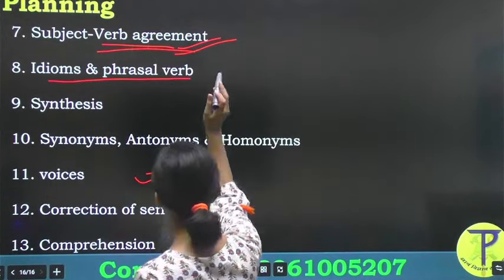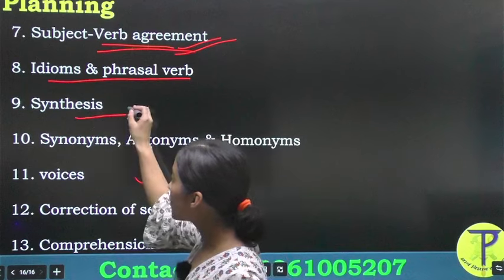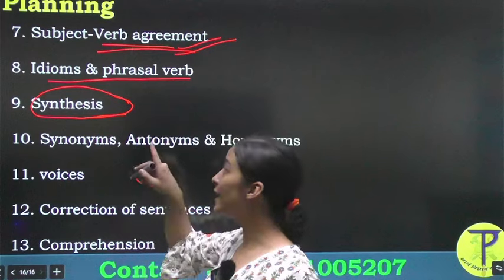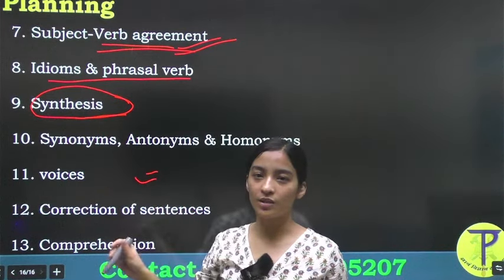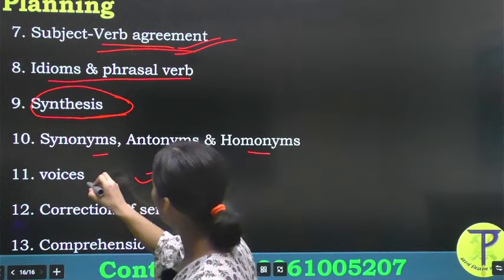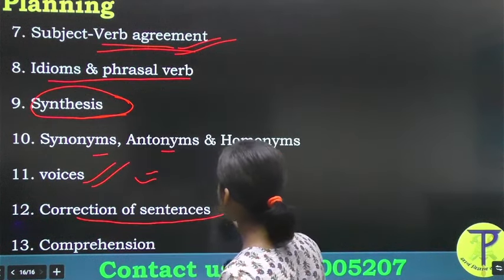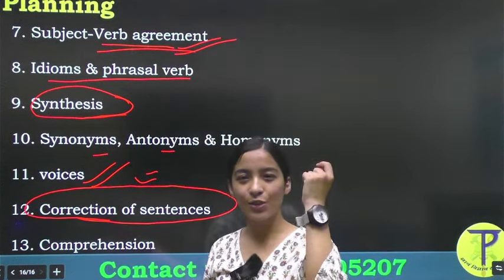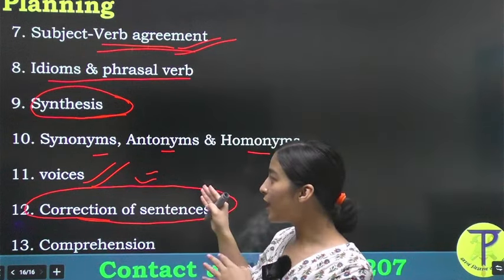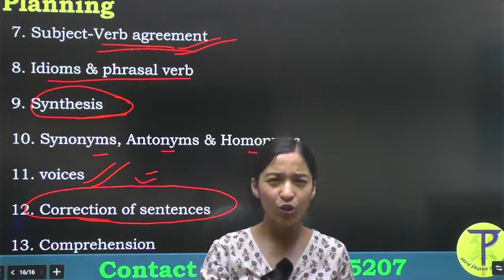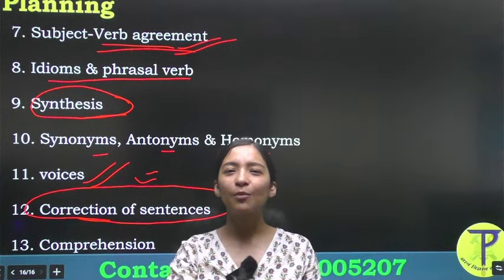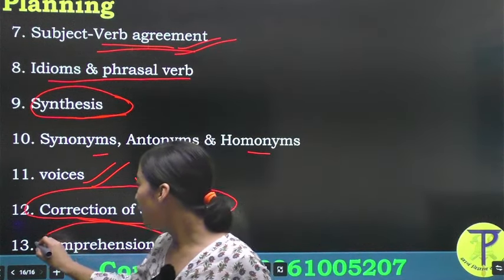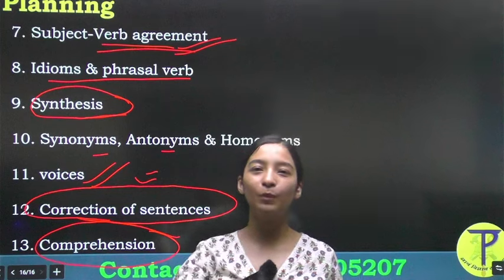Idioms and phrasal verbs, then synthesis of sentences — which is a new topic we will have to study. Direct and indirect speech and synthesis of sentences are both new topics. Then synonyms, antonyms, and homonyms. Voices. Correction of sentences — after doing the whole syllabus, when you attempt correction of sentences, you will look at the sentence and be able to tell that there is a mistake of preposition, a mistake of tense, or a mistake of subject and verb agreement. You will just take a look and you will know. Then there will be comprehension with full practice.